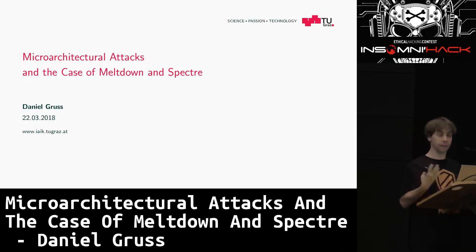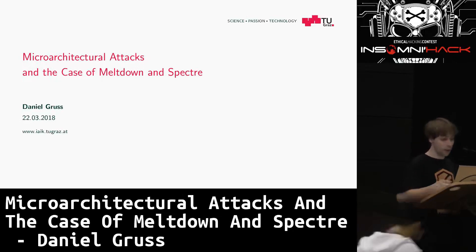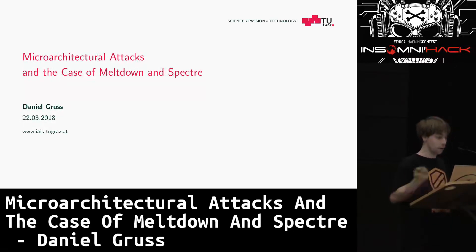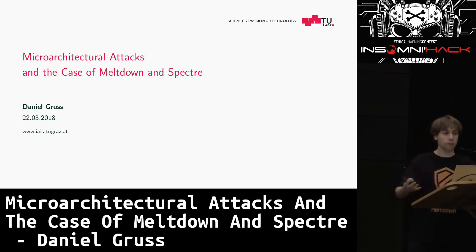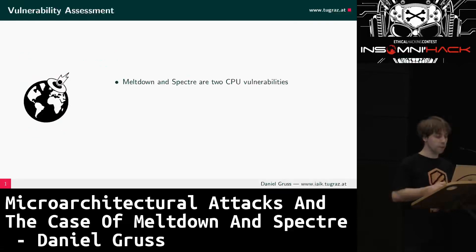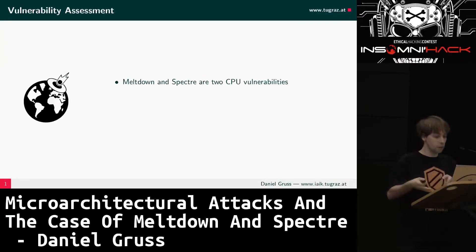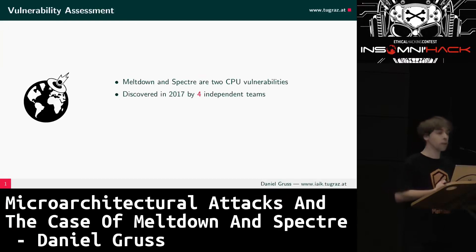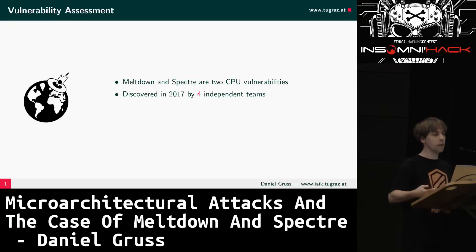Thanks for having me here. Today I'm going to talk about micro-architectural attacks in general, and specifically Meltdown and Spectre. Just before we dive into the topic, I want to start with some vulnerability assessment. Meltdown and Spectre are CPU vulnerabilities — they exist in hardware — and they were discovered in 2017 by four independent teams.